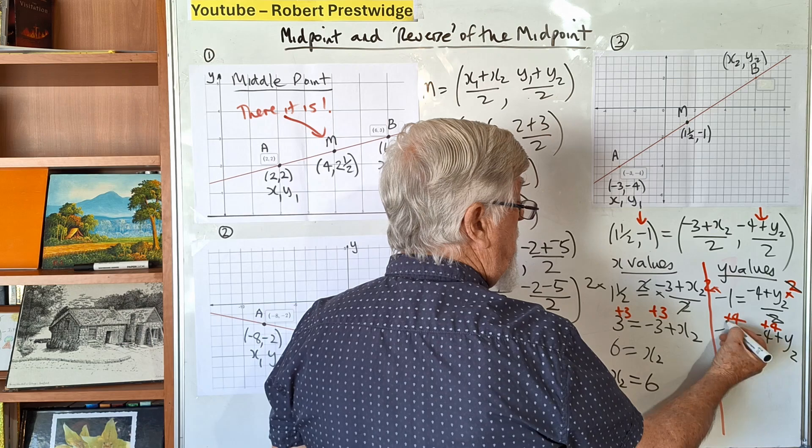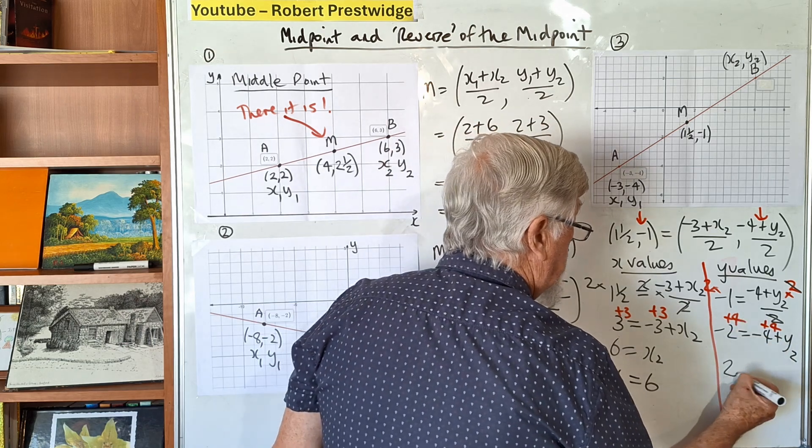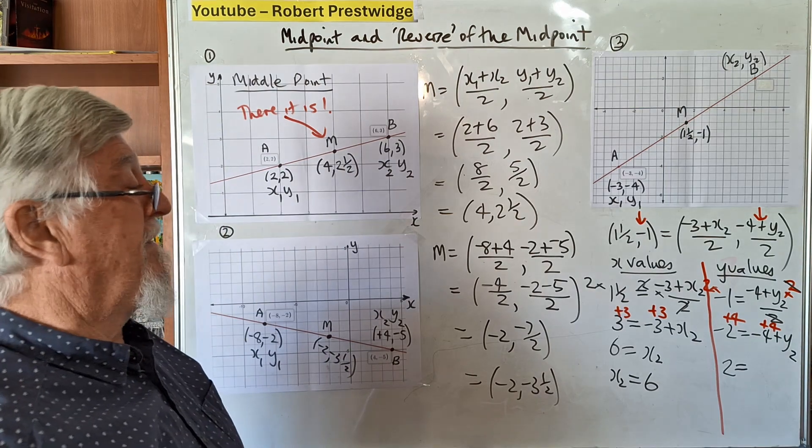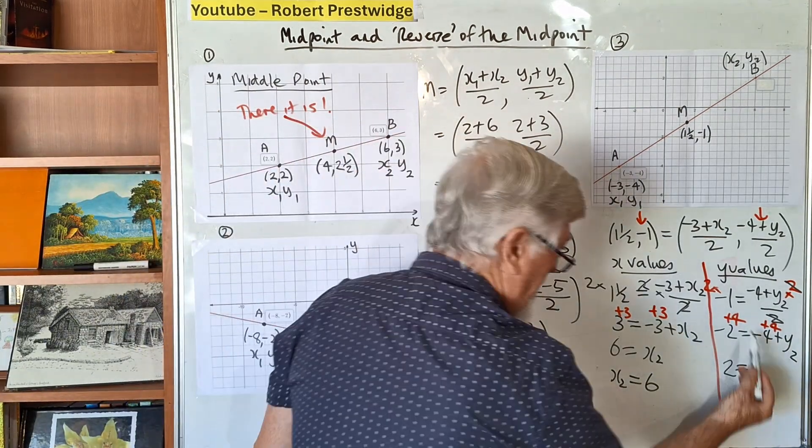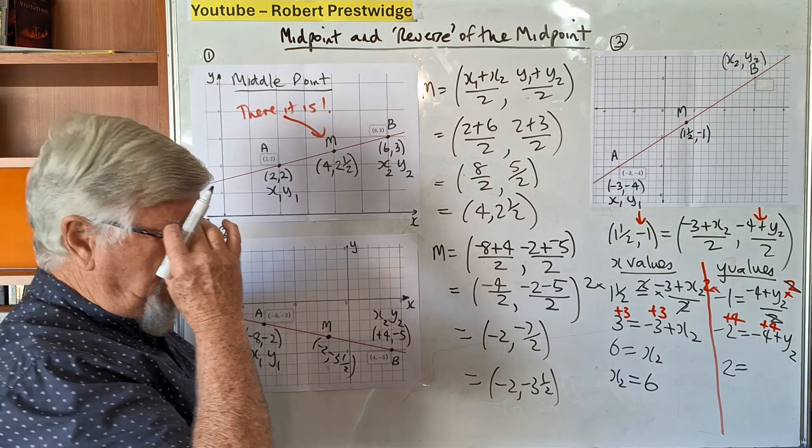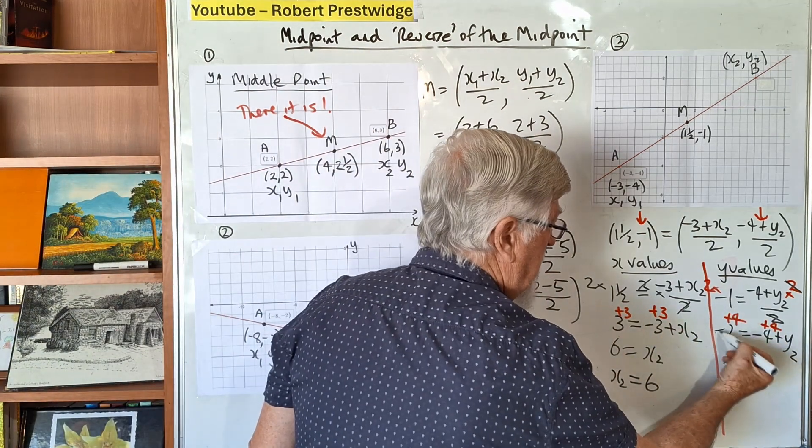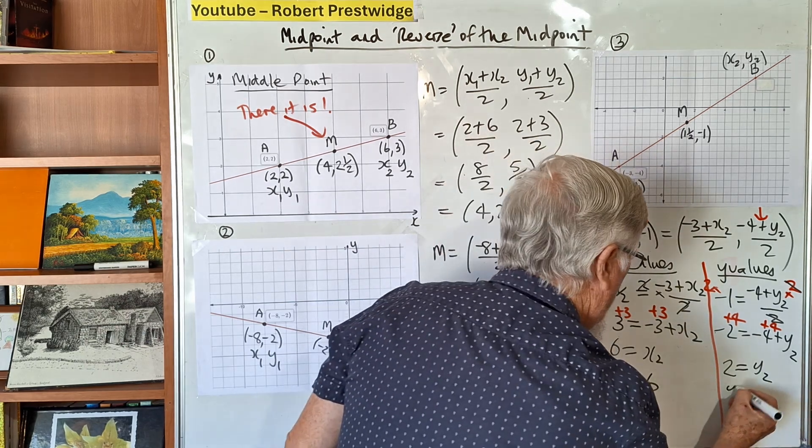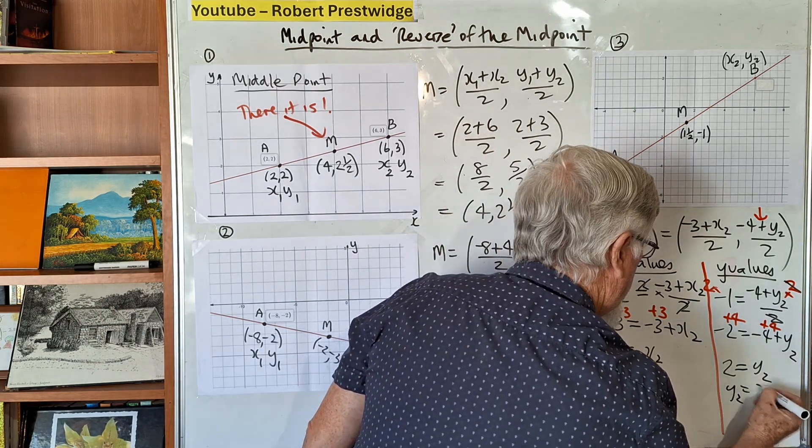If I borrowed $2 and gave back $4, I've given back $2. I prefer just going 4 take 2. Do the positives first - that's 4, take the 2, which is 2. The -4s are gone and that's y₂. So our y₂ value is 2.